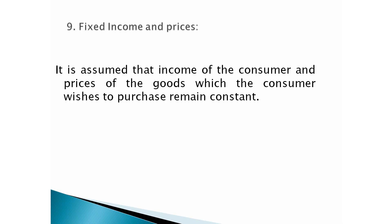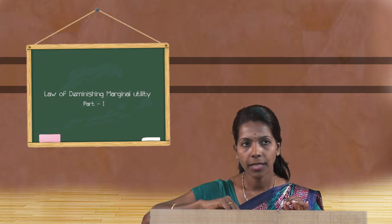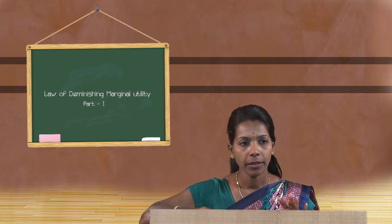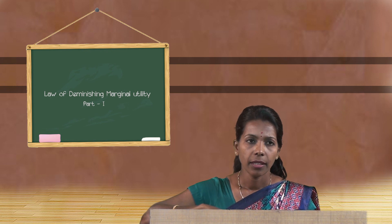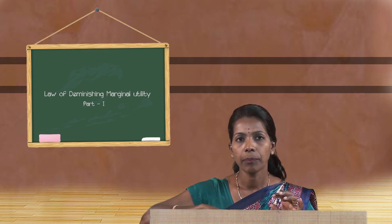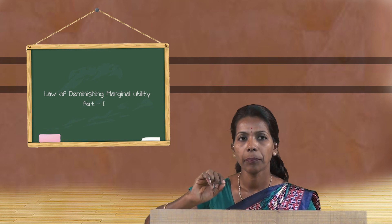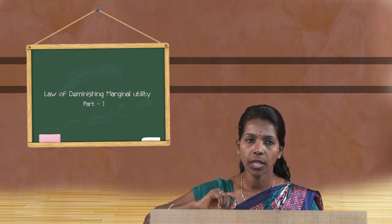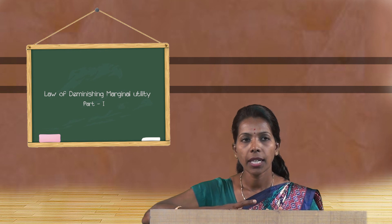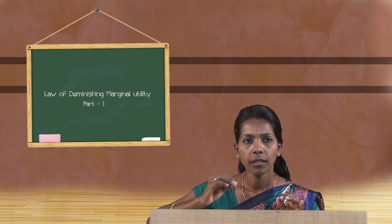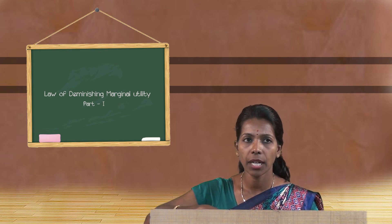The last assumption is fixed income and prices. The Law of Diminishing Marginal Utility also assumes that the consumer's income and the prices of goods they wish to purchase remain constant. With this, we have studied the meaning of utility, total utility, marginal utility, the theory of the Law of Diminishing Marginal Utility, and its assumptions.